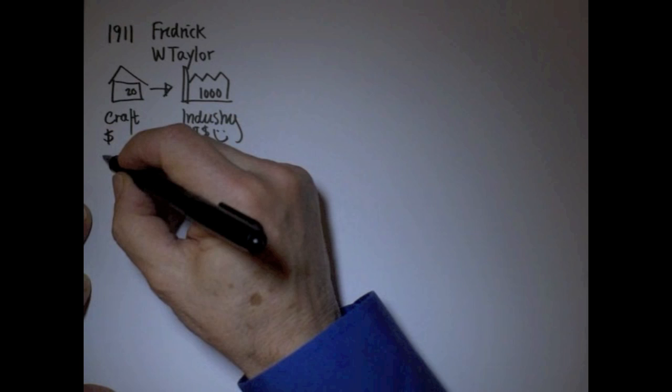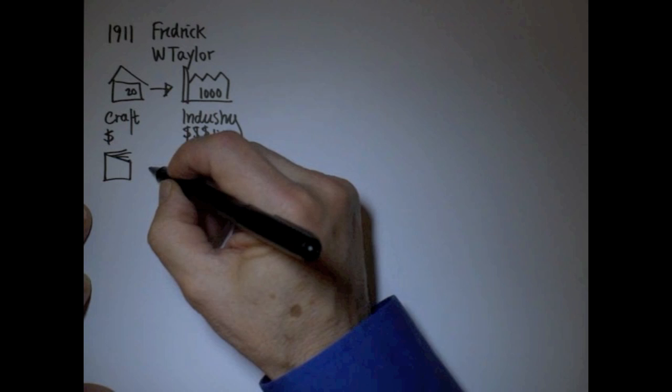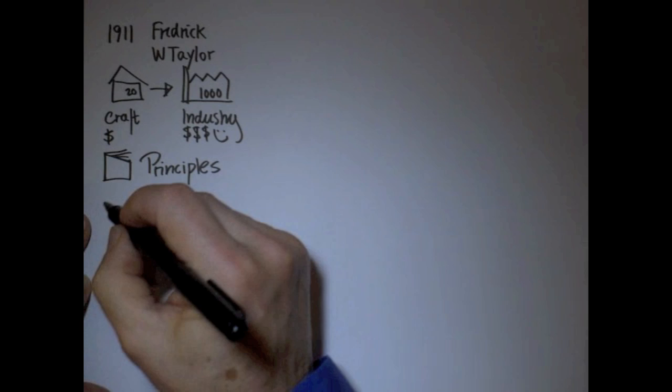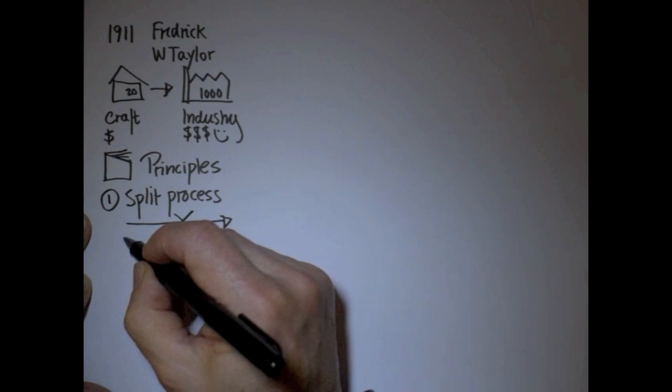He wrote a book, The Principles of Scientific Management, 143 pages, and that book has three main principles. The first one is that each process should be split into small processes so that each of those small processes could really be refined and optimized the best possible way.